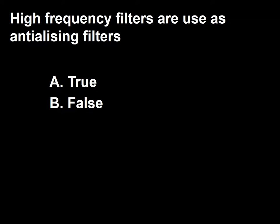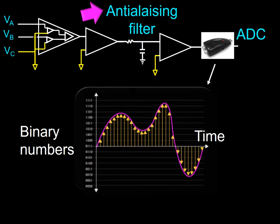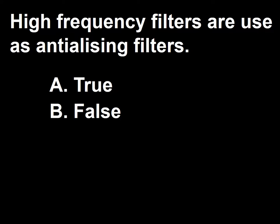Anti-aliasing is a term we will discuss in depth when we talk about analog-to-digital converters. For now, let's say that they lower the frequency of the fastest wave presented to the analog-to-digital converter, making it easier to avoid aliasing. The purpose of placing a high-frequency filter prior to the ADC is to avoid aliasing by eliminating high-frequency rhythms that do not contribute to the value of the test, thus decreasing the need for computation. So the answer to this question is true.